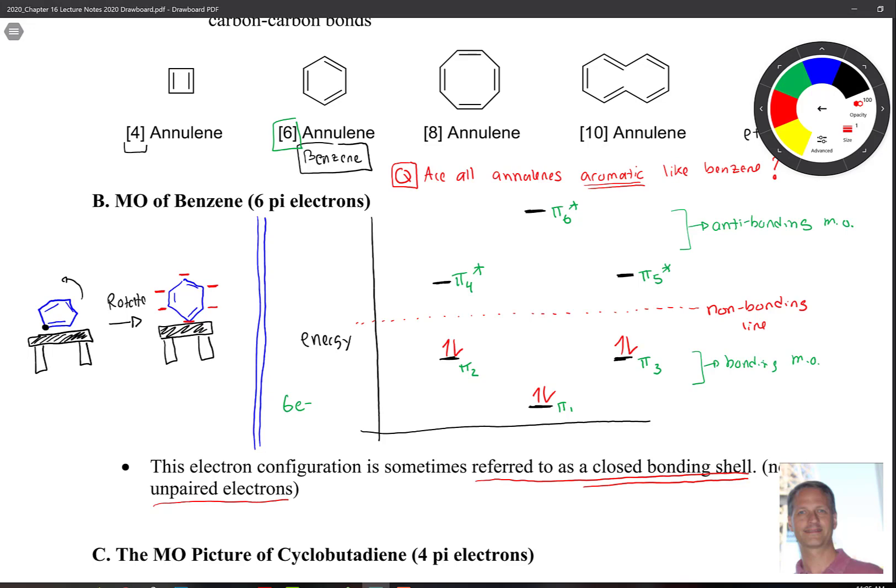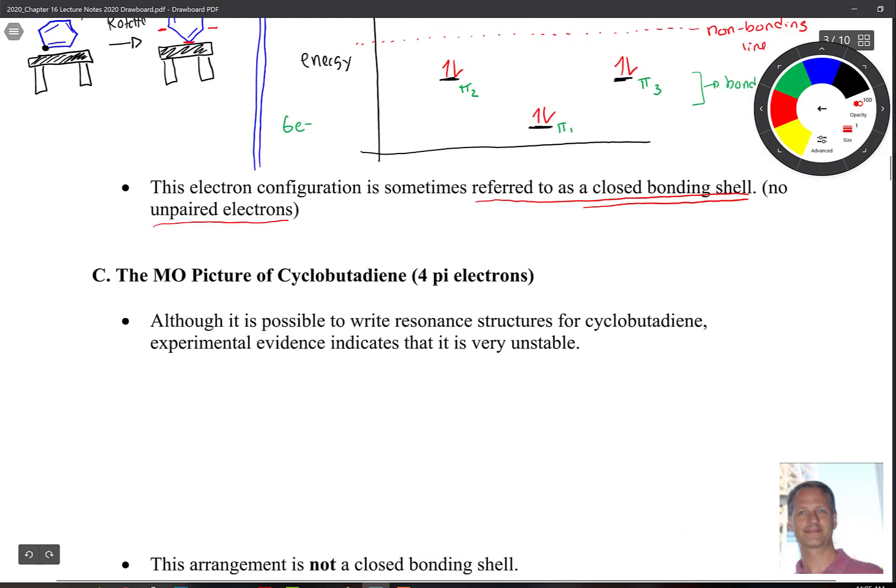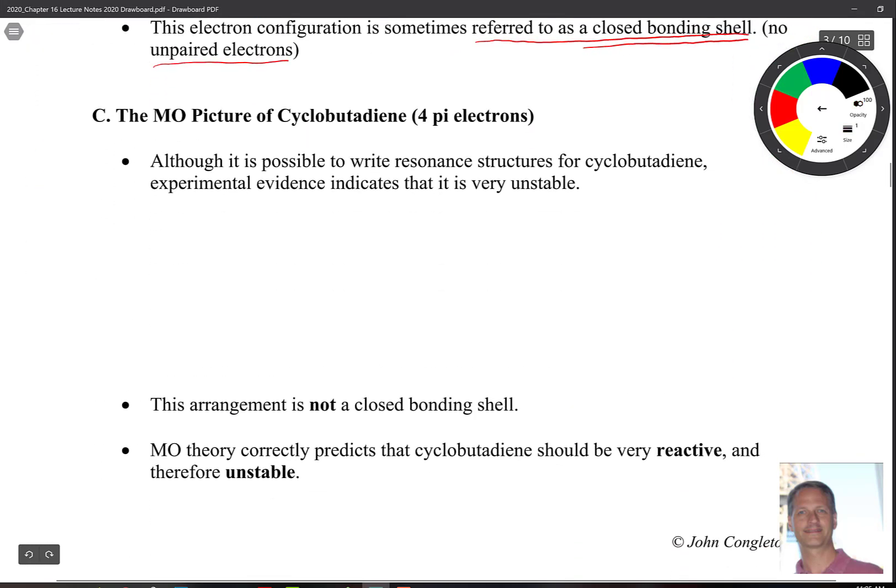Now let's take a look at another annulene. Let's go back - we did six, let's look at four. So down here below, let's take a look at 4-annulene. And so again, what we're going to do is imagine you have your table here, and you're going to tilt that square over on the side so you get something that looks kind of like that.